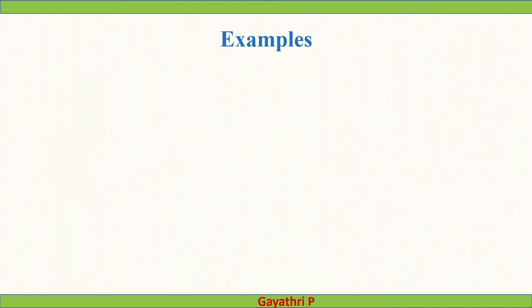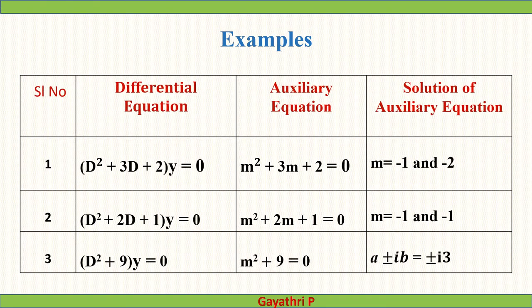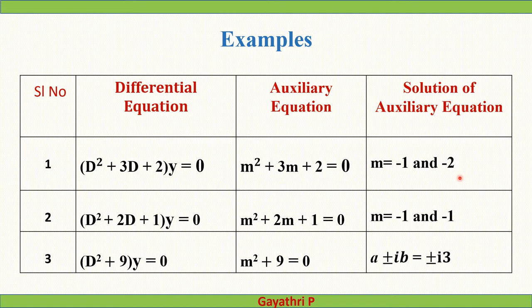Examples of differential equations, their auxiliary equations, and roots are shown in the table. The first example is (D² + 3D + 2)y = 0. Its auxiliary equation is m² + 3m + 2 = 0, obtained by replacing D with m. Factorizing gives roots m = -1 and m = -2. These are real but distinct, so this equation has real and distinct roots.